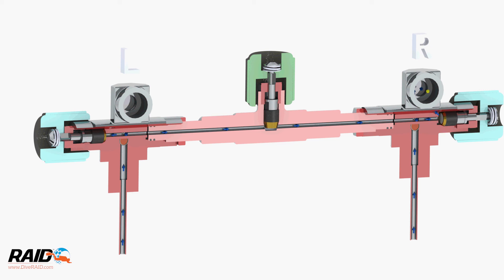If we reverse the situation, we can feed the right valve from the left and right cylinder by having the isolation valve open and the left valve closed.